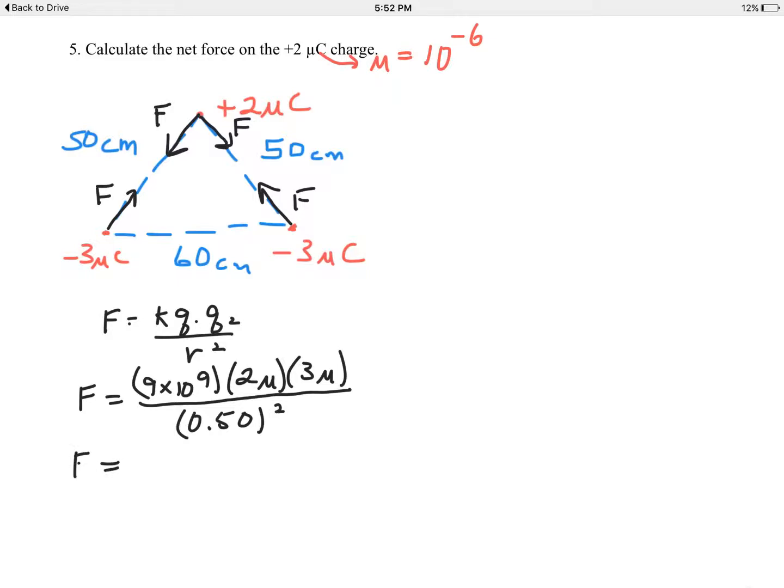So the force—all four of those forces—comes out to be 0.216 newtons. But now it's a vector problem. We have to add those two vectors at the top of this triangle.